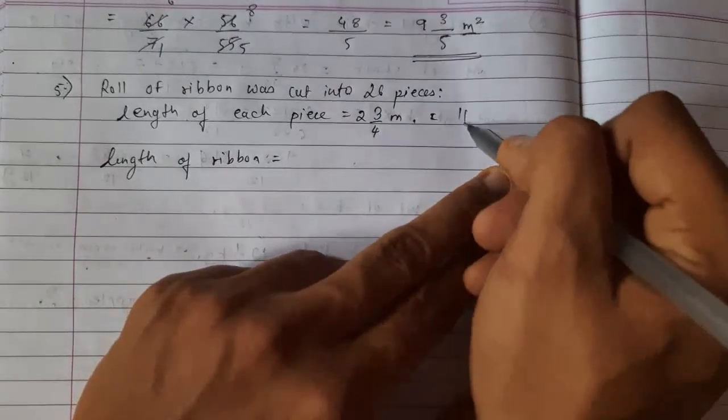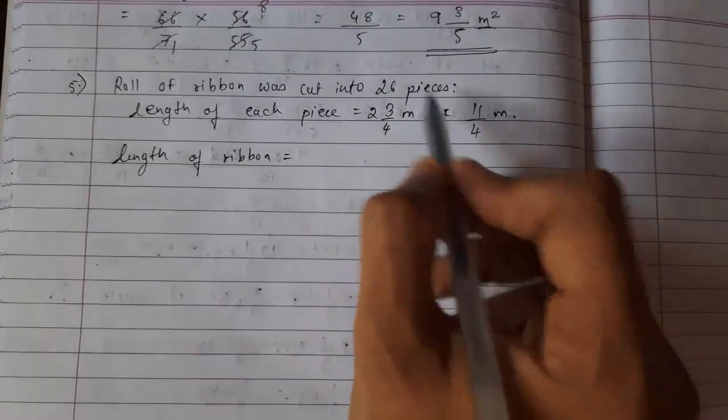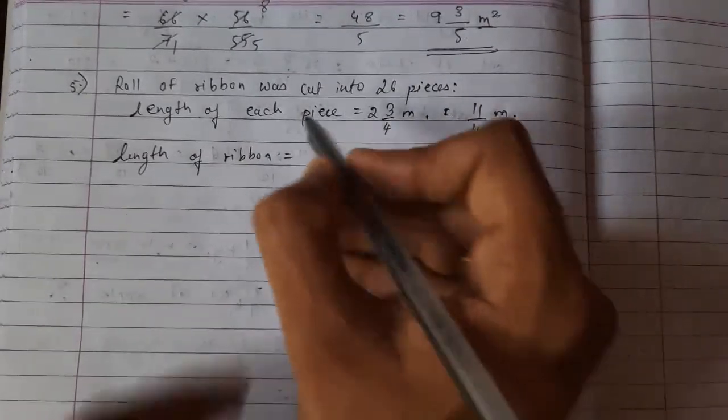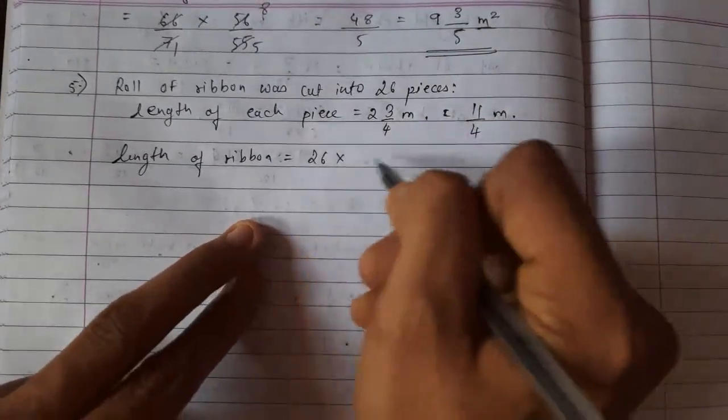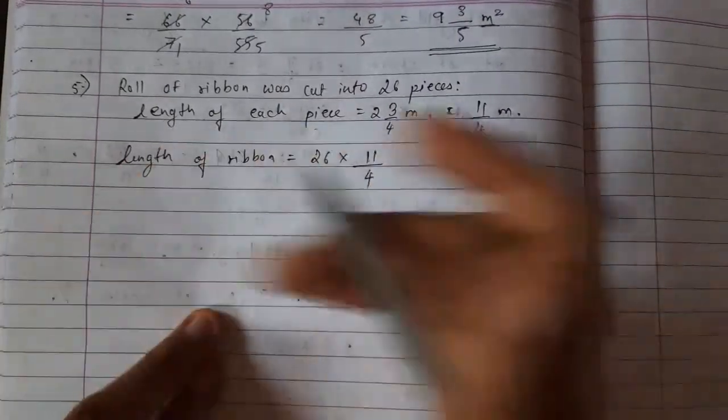Length of ribbon we have to find. That ribbon was cut into 26 pieces, and each piece was of this much length. Let us find the rational number. 4, 2, 8 plus 3, 11 upon 4 meters. So 26 pieces should be multiplied by length of each piece. You will get the whole ribbon's length.